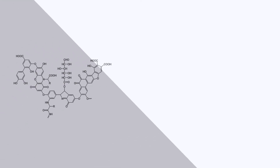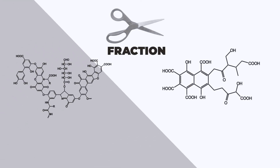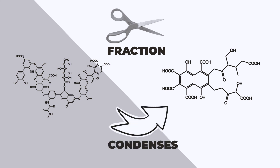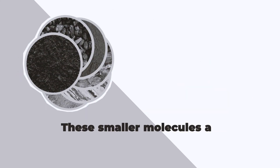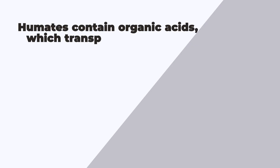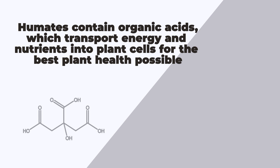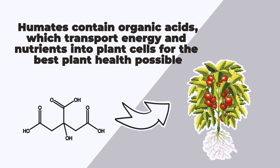Fulvic acid is considered a fraction of the humic acid. As humic acid condenses, its molecules become smaller. These smaller molecules are the fulvic portion of a humate substance. Humates contain organic acids, which transport energy and nutrients into plant cells for the best plant health possible.